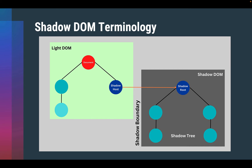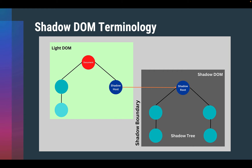This is the basic architecture of how Shadow DOM elements are linked to the main DOM. We call the main DOM the light DOM and the DOM with shadow elements the Shadow DOM. The shadow host is the regular DOM node to which the Shadow DOM is attached. This becomes your shadow root — the root node of the shadow tree. And the shadow boundary is the place where the Shadow DOM ends and the regular DOM begins.